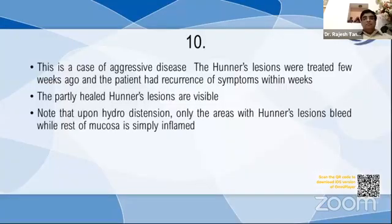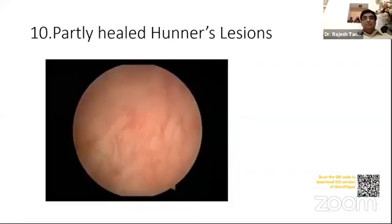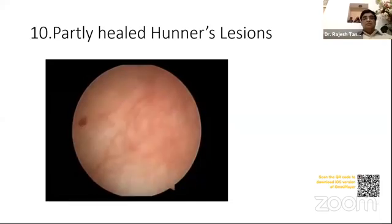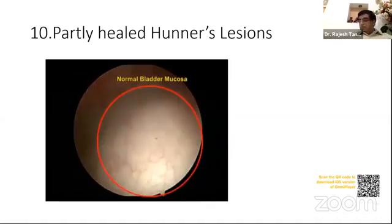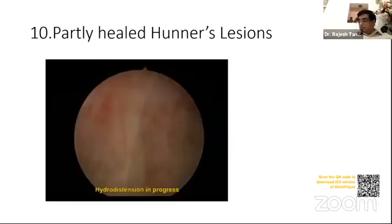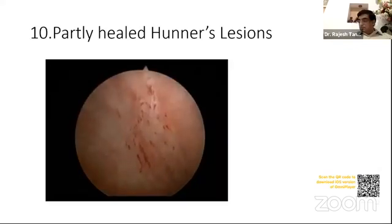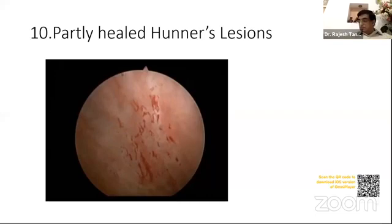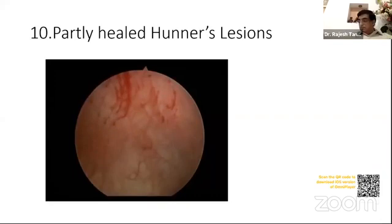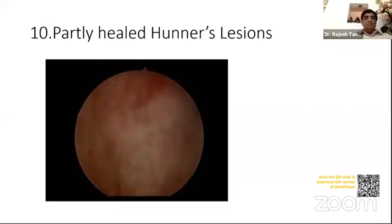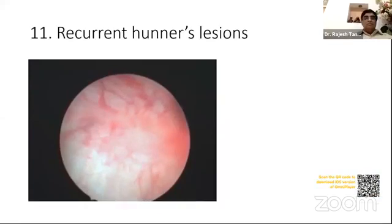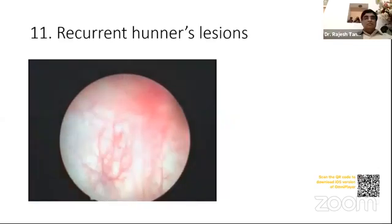This is a case of aggressive disease. The Hunner's lesions were treated a few weeks ago and the patient had recurrence of symptoms within weeks. The partly healed Hunner's lesions are visible. Note that upon hydrodistension, only the areas with Hunner's lesions bleed while the rest of the mucosa is simply inflated.